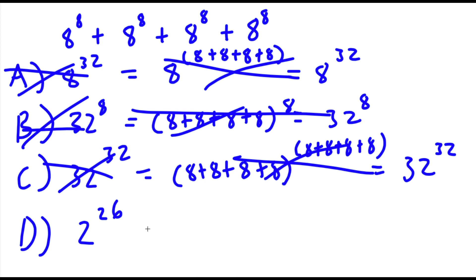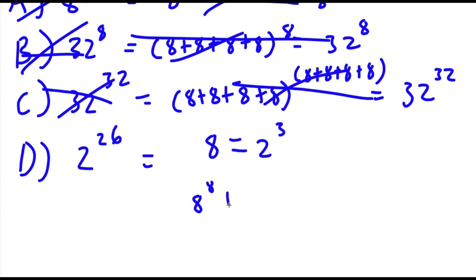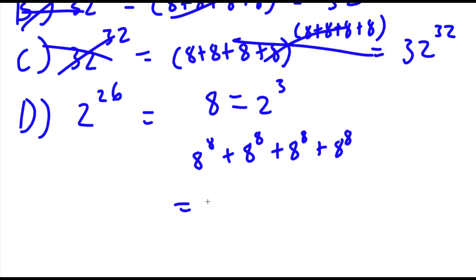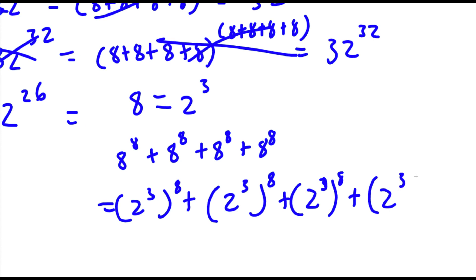Finally, for D, which is actually the right answer, they first recognized that 8 is the same thing as 2 to the power of 3. So we have 8 to the power of 8 plus 8 to the power of 8 plus 8 to the power of 8 plus 8 to the power of 8. And now if I substitute in 2 to the power of 3, I get 2 to the power of 3 to the power of 8, four times added together.